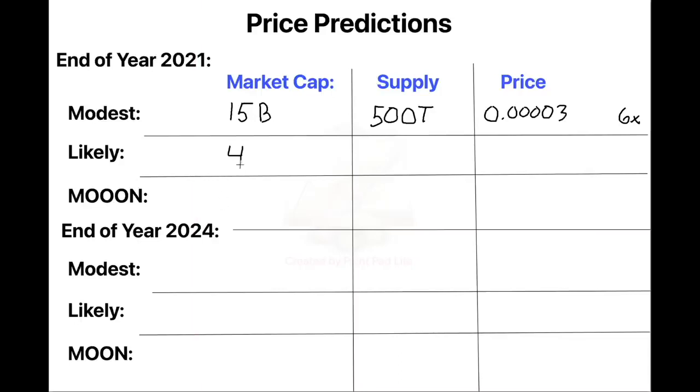The likely solution, I think, is that we are going to have a $40 billion market cap, we'll burn a lot more supply down to 460 trillion, and we'll get a price of $0.00008, or a 16 times jump from where we are right now.